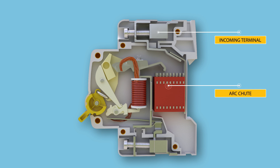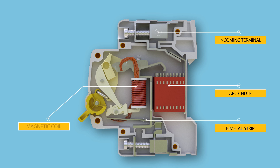The arc chute is a stack of mutually insulated parallel metal plates which divide and cool the arc. The bimetallic strip is part of the thermal tripping arrangement, around which a heater coil is wound to create heat depending on the flow of current. The magnetic coil is also part of the tripping arrangement; in case of short circuit or heavy overload, a strong magnetic field is produced in the coil.